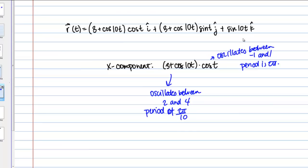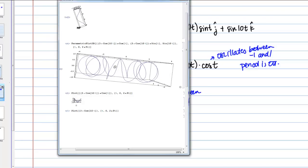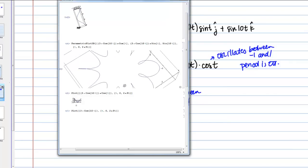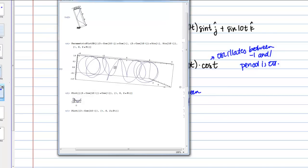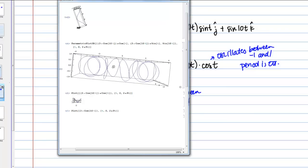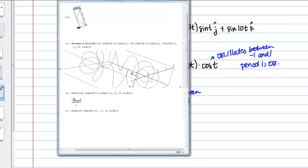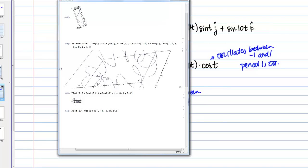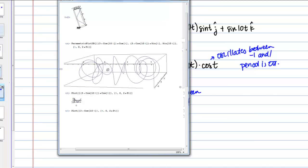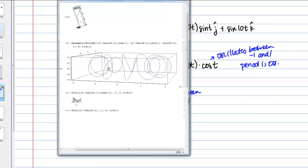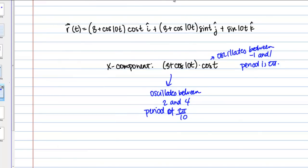Putting this all together — try to picture it before seeing it — the curve actually looks like a slinky. Looking from the top, we can see the combined X and Y motion, and from the side we see the Z component's regular oscillations between negative 1 and 1. Together, these produce a really cool slinky shape. This is an example of one you probably wouldn't graph by hand, but you can get a sense of its features just by thinking through the individual components. Hopefully this video has given you a sense of how to approach graphing curves in vector-valued functions.